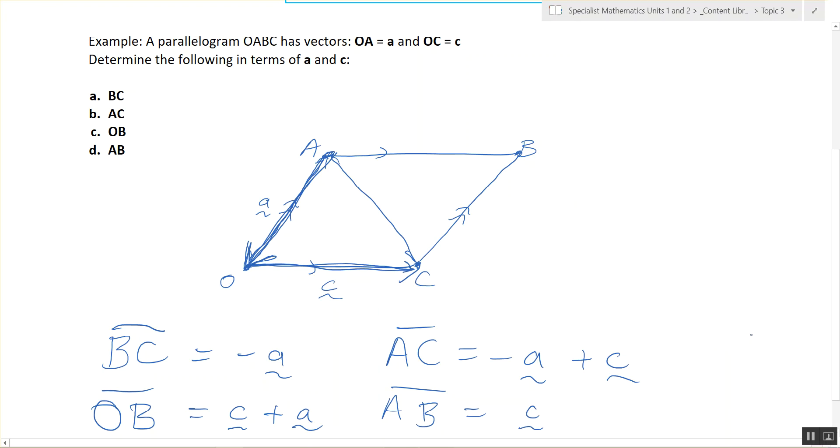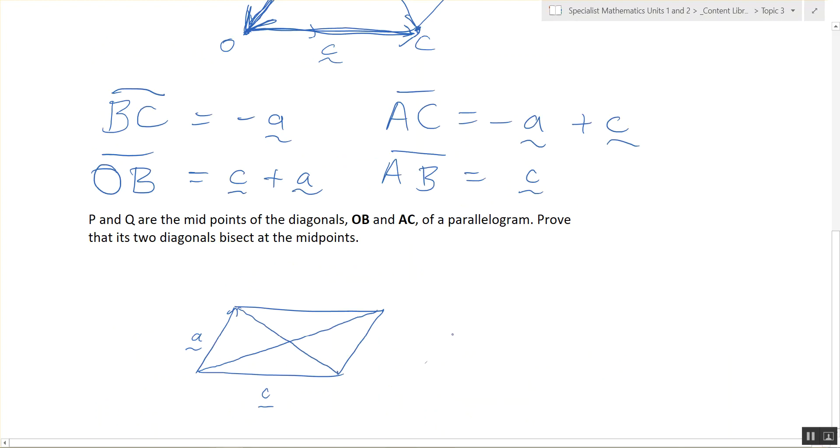Does it make sense? Some of us need to practice that. So P and Q, I've just used random letters. They are the midpoints in the two diagonals. Okay?